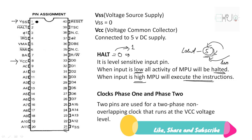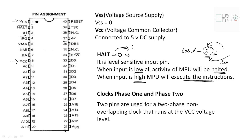Pin 3 is Phase 1 and pin 37 is Phase 2. These are the two clock phases — non-overlapping clocks that run on the VCC voltage level. These two clocks never overlap each other.